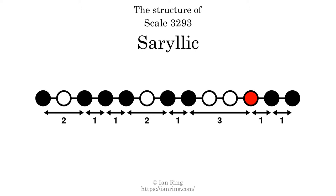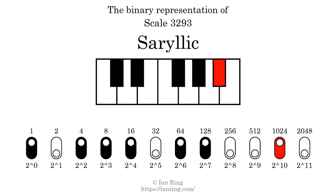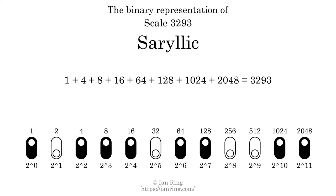The binary representation of this scale is determined by mapping tones of the scale to binary digits. Each binary digit represents a power of 2. To get the scale number, we add the powers of 2 together. The powers of 2 that are present in the scale, all added together, equals 3293. That is why the scale number, in decimal, is 3293. The scale number not only enumerates the scale with a unique index, but it also literally describes the tonal content of the scale, represented as a binary number in base 2.